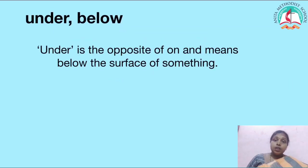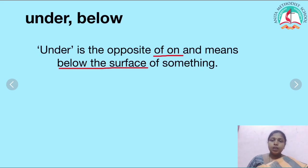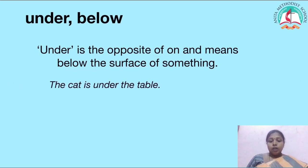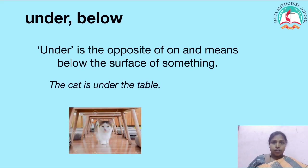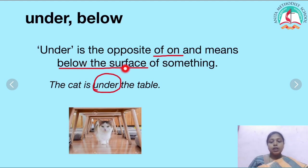Now let's see where to use under and below. Under and below refer to something which is down. Under is the opposite of on and means below the surface of something. For example: the cat is under the table. Can you see? The cat is under the table — it is below the surface. So under is the opposite of on and means below the surface of something.